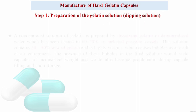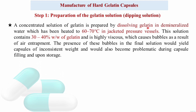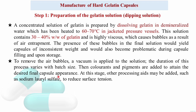Step 1: Preparation of the gelatin solution. A concentrated solution of gelatin is prepared by dissolving gelatin in demineralized hot water maintained at 60 to 70 degrees Celsius in jacketed pressure vessels. This solution contains 30 to 40 percent weight-by-weight gelatin and is highly viscous, which causes bubbles due to air entrapment. Bubbles in the final solution would yield capsules of inconsistent weight and cause problems during capsule filling and storage. To remove air bubbles, vacuum is applied; duration varies by batch size. Colorants, pigments, and processing aids such as sodium lauryl sulfate are added to attain the desired appearance and reduce surface tension.